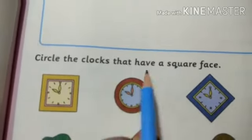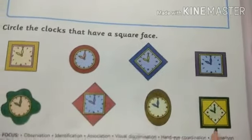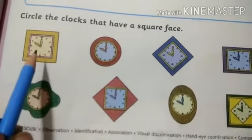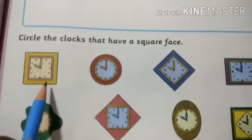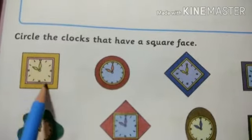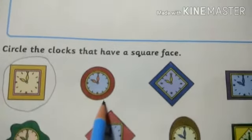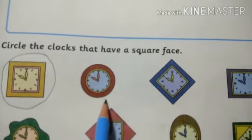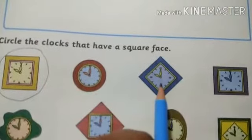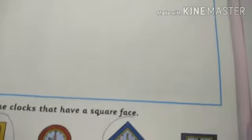Circle the clocks that have a square face. Different shapes of clocks are given. Whichever clock is in square shape, circle it. This clock is in square shape — circle it. This one is circle shape. This one looks like a diamond but rotated — it is square shape with four sides.